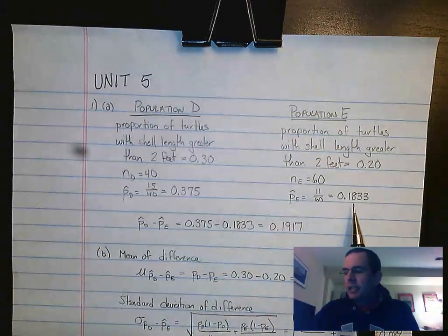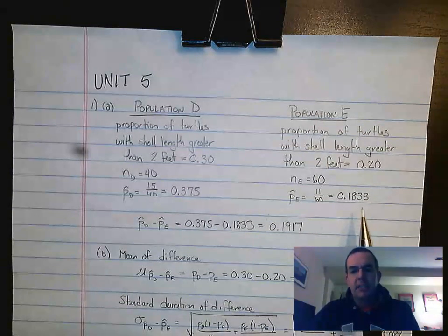11 over 60 gives you 0.1833 for Population E. Make sure you show the fraction. That's the work part, that's the important part that they're going to be looking for.